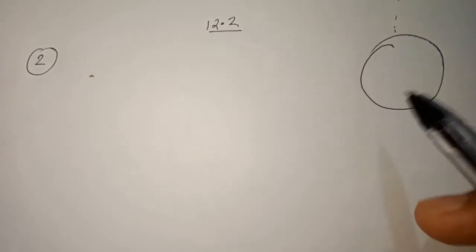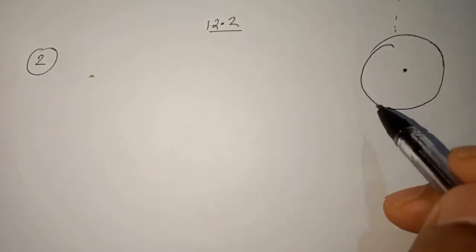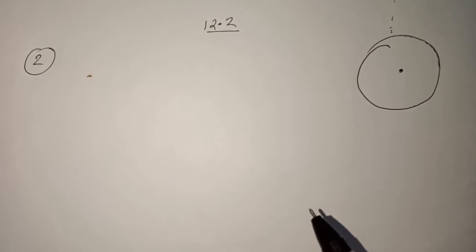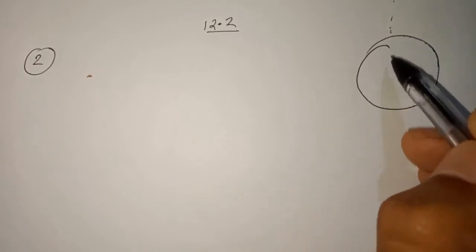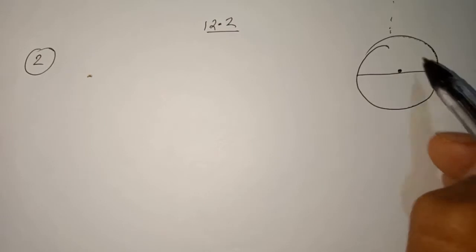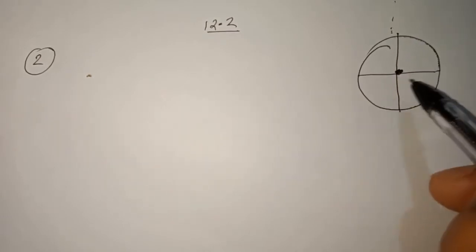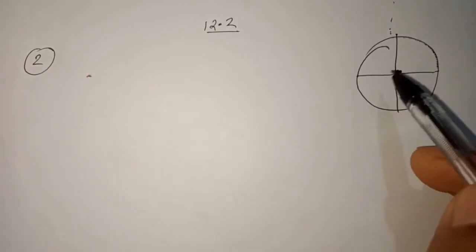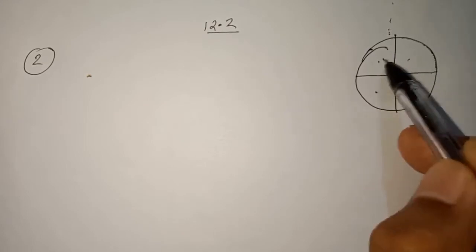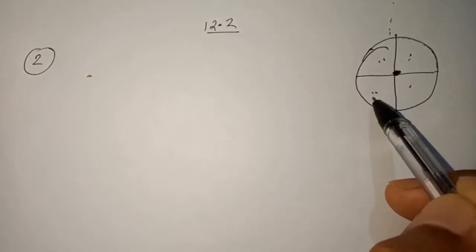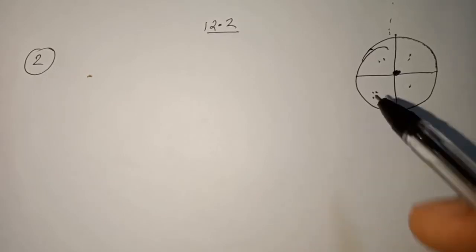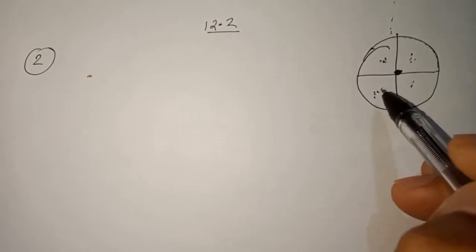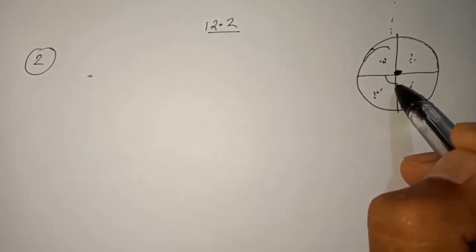Using our formula: the circumference formula is 2 pi r. If 2 pi r equals 22, then we can simplify. The formula for the circumference of a circle is 2 pi r.